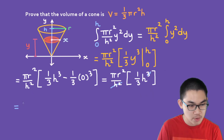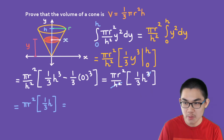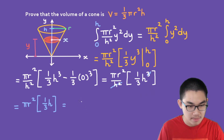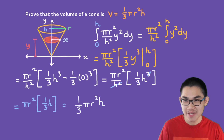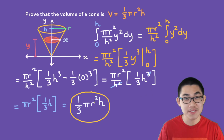This gives us π × r² × 1/3 × h, which is simply equal to 1/3 × π × r² × h — our volume formula. And that is it! I've just proved to you that the volume of a cone equals 1/3 × π × r² × h using integrals in calculus.